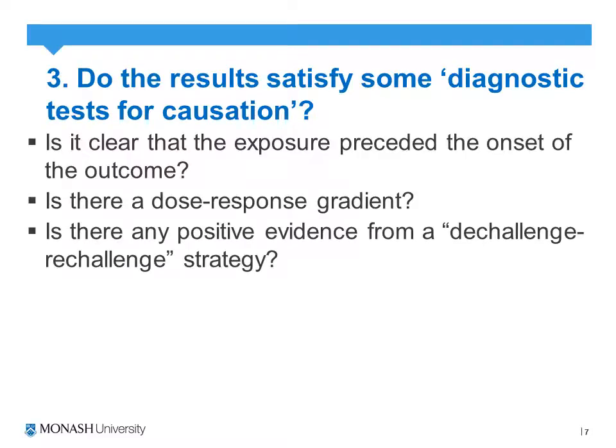Lastly, is there any positive evidence from a de-challenge, re-challenge study? A de-challenge, re-challenge study identifies whether, if we expose the patient to the risk factor, they have the outcome, and likewise if we remove the risk factor, does the outcome go away? With our NSAID example, a de-challenge, re-challenge study would involve exposing patients to NSAIDs, and if they get an adverse event such as nausea, removing them and following up to see if they still have the nausea. If they don't, then the risk factor — NSAIDs — can be closely linked with the outcome.